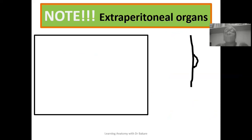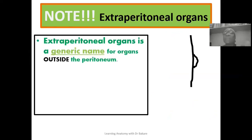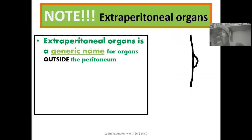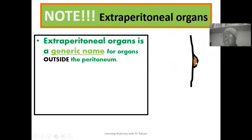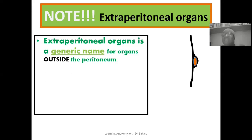Extraperitoneal is a generic name for organs that are located outside the peritoneum. Organs can be located within the peritoneum, whereby all surfaces are lined by peritoneum — that is intraperitoneal presentation. When located outside, they are extraperitoneal. Depending on the specific position outside the peritoneum, they receive a specific name.